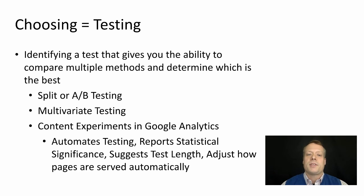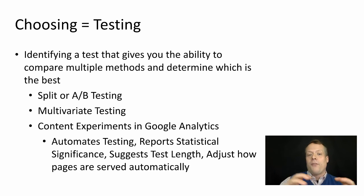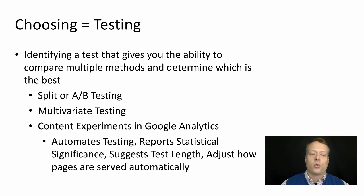Some standard methods of testing include split or A/B testing, which is what we're going to talk about a lot today. That basically means comparing two options and choosing which one is best. Multivariate testing allows you to compare more than two options simultaneously. Content experiments is a particular way of doing split and A/B testing in Google Analytics, which allows you to do things like automating your testing, recording statistical significance, and figuring out what the test length is — a quick way to get your hands on these tools, especially if you're already using Google Analytics in your digital marketing strategy.